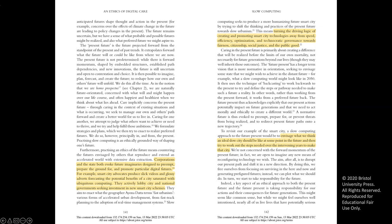An ethics of digital care, Kitchin and Fraser argue, promotes turning the driving logic of smart cities' technologies away from speed, efficiency, optimization, and technocratic governance towards fairness, citizenship, social justice, and the public good. They call us to envisage what we think an ideal slow city should look like at some point in the future, and then try to work out the steps needed over the intervening years to make that city.